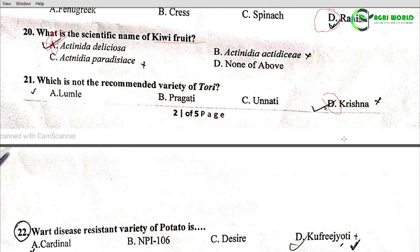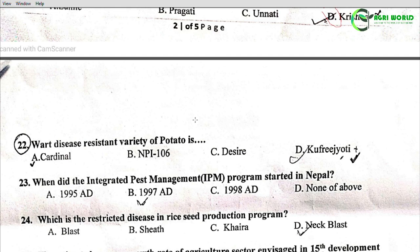Question 22: Which variety of potato has disease resistance? Options: Cardinal, NPI 106, Desire, Kufri Jyoti. The correct answer is Kufri Jyoti.